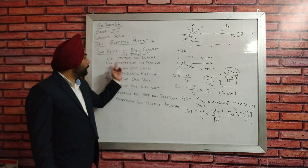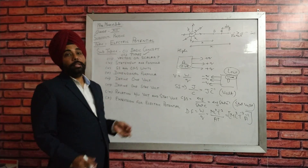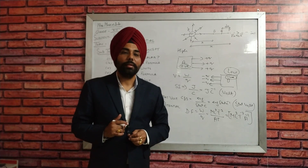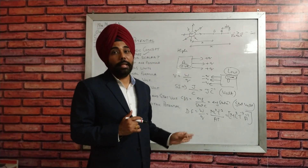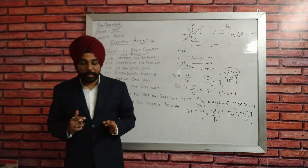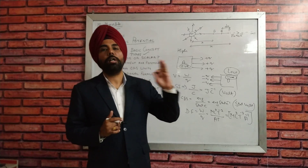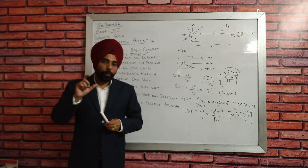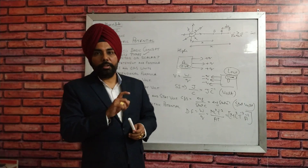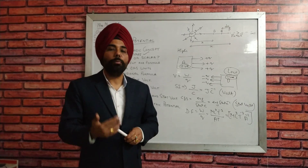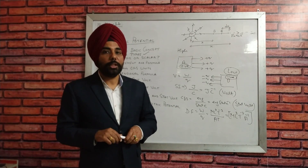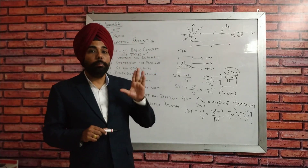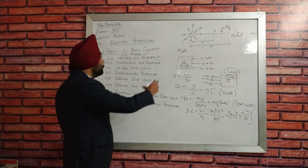Now the main thing — is electric potential a vector or a scalar quantity? Although it has a direction, it is a scalar quantity. The reason is the same as for current: current also has a definite direction but is also a scalar quantity. The reason is that both electric potential and current do not follow simple vector algebra — they do not follow the parallelogram law, triangle law, or polygon law of vector addition. That is why electric potential and current are both scalar quantities even though they have a particular direction.